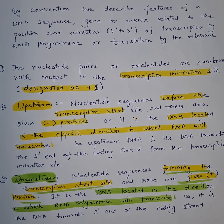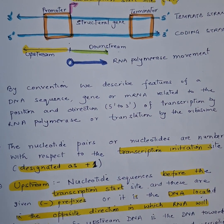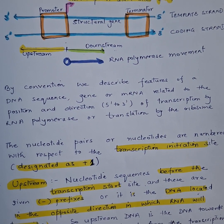So it is the DNA towards 3 prime end of the coding strand. You can see the diagram here: upstream, downstream, RNA polymerase movement. Thank you.